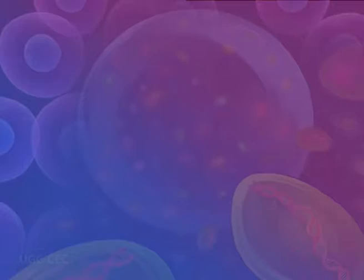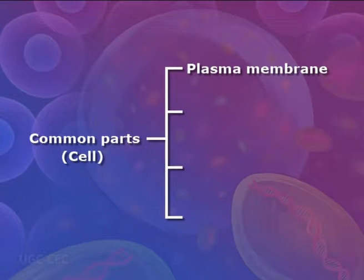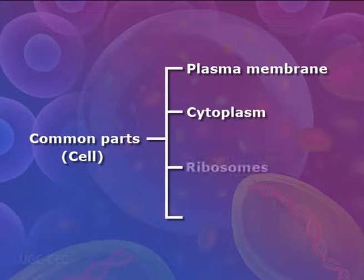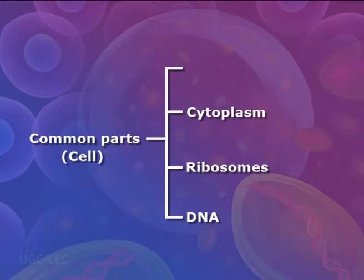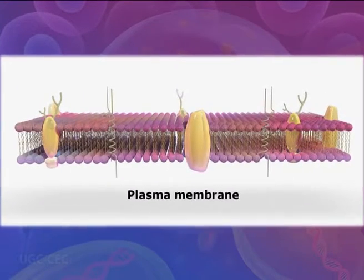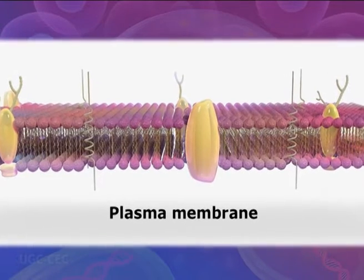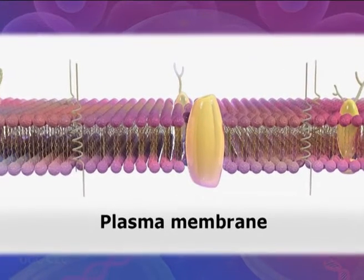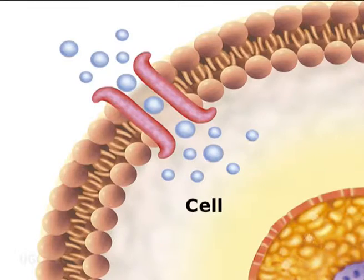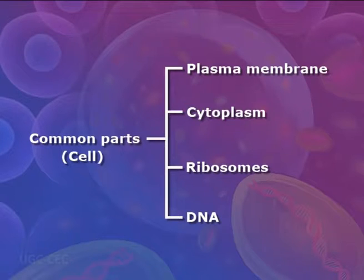Although cells are diverse, all cells have certain parts in common, including a plasma membrane, cytoplasm, ribosomes, and DNA. The plasma membrane, also called the cell membrane, is a thin coat of lipids that surrounds a cell. It forms the physical boundary between the cell and its environment. Cytoplasm refers to all of the cellular material inside the plasma membrane, made up of a watery substance called cytosol and containing other cell structures such as ribosomes.